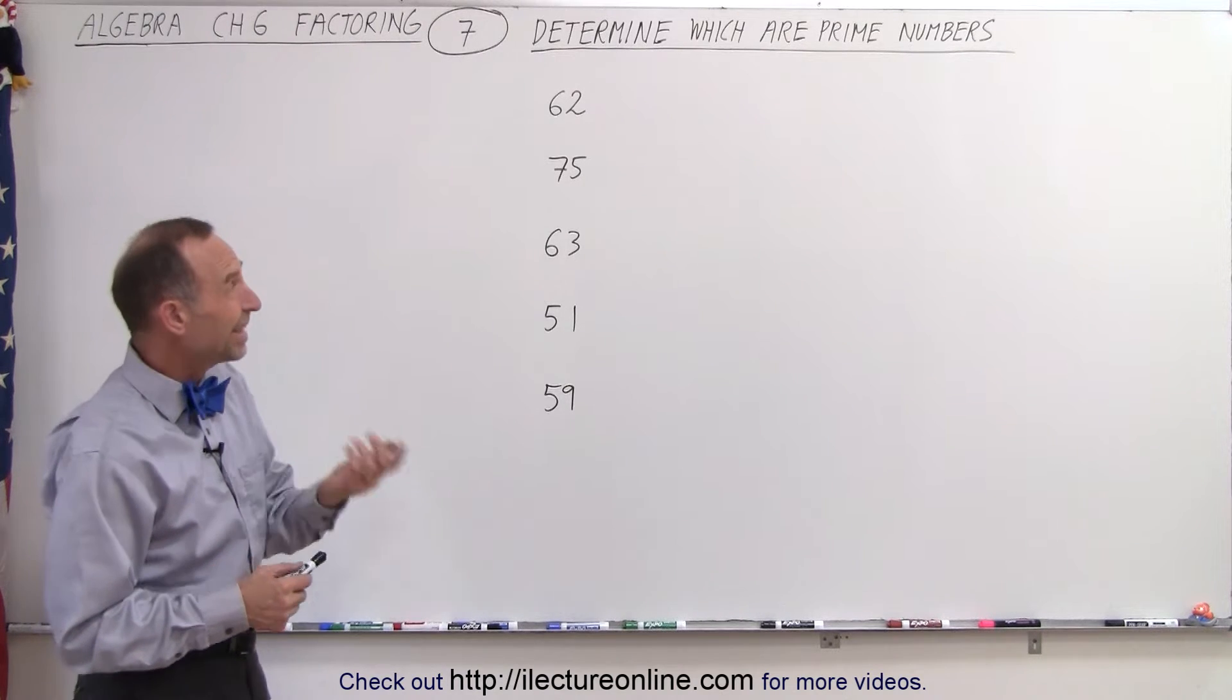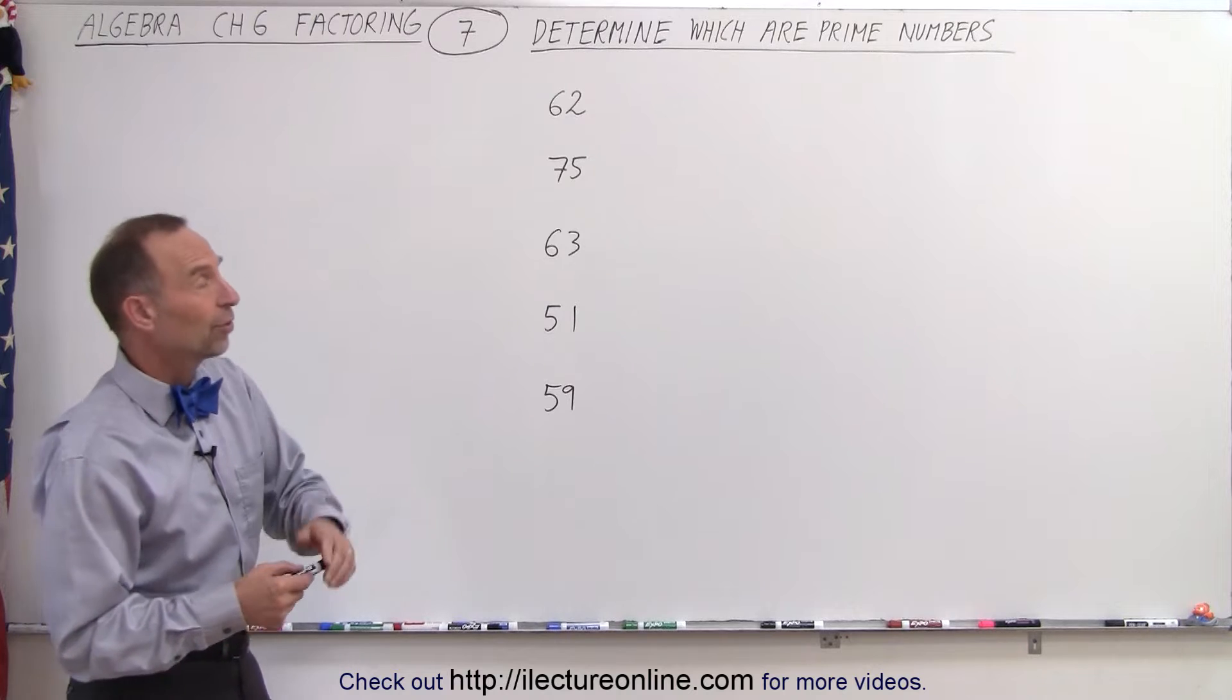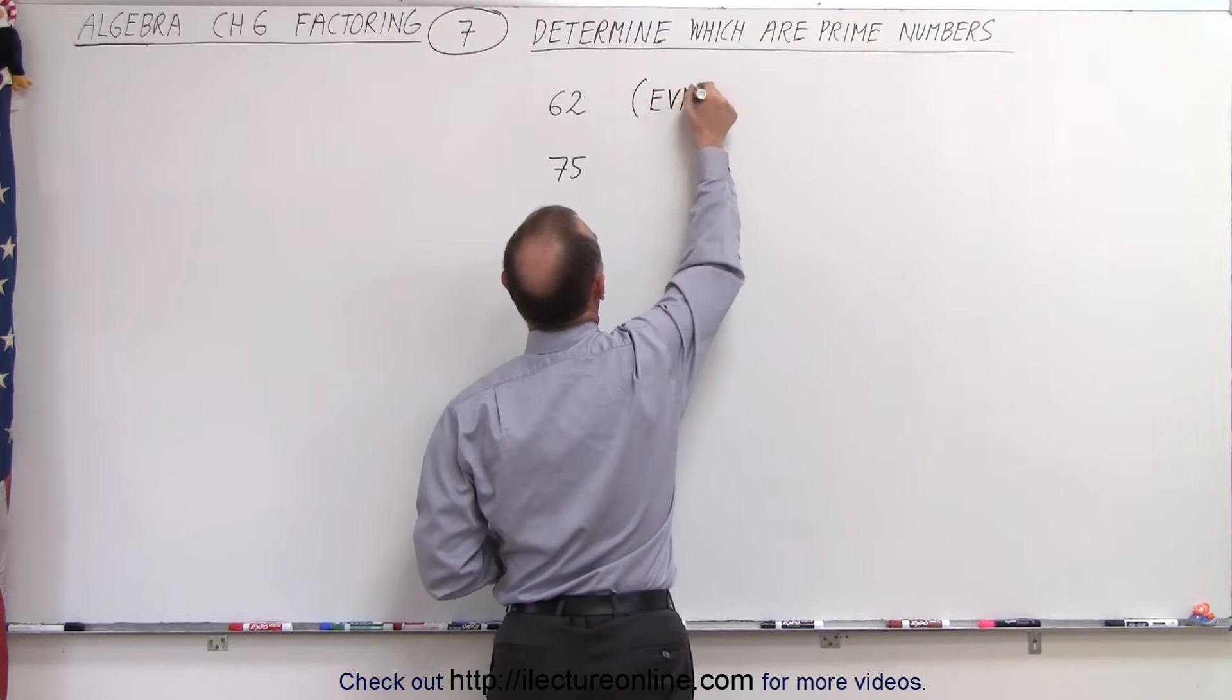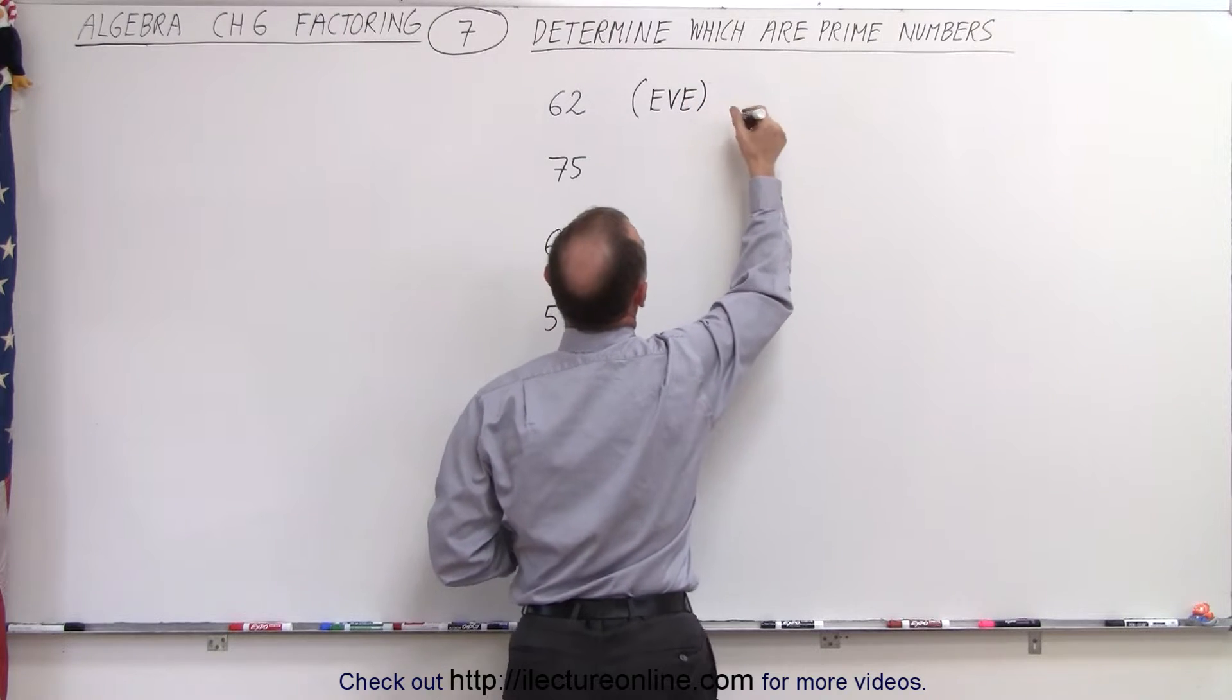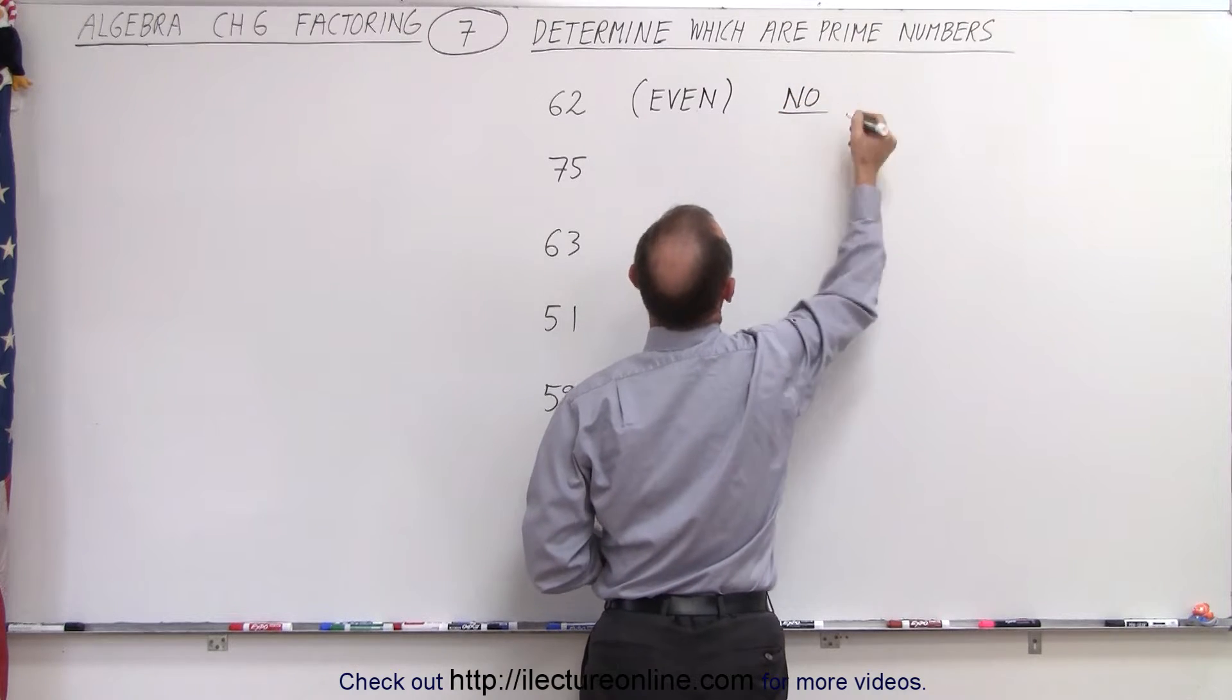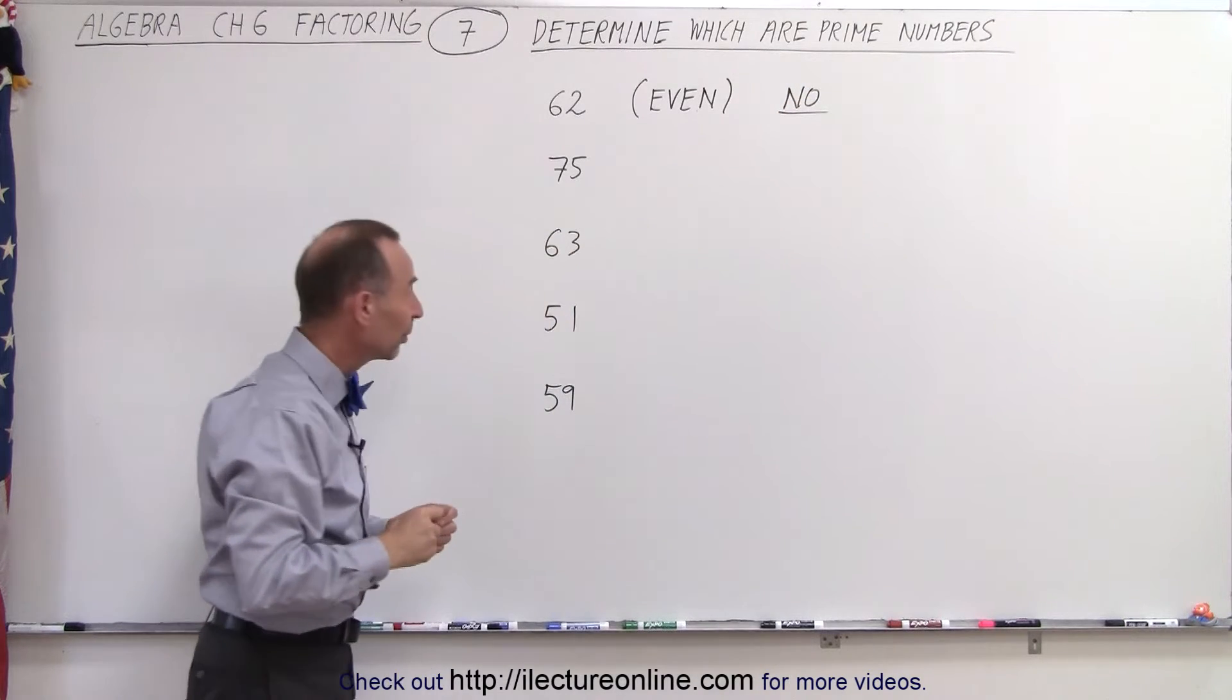So looking at our first number, 62, since it's even, we know it's not a prime number. So it's an even number, it's divisible by 2, therefore, oh I've forgotten the end here, even, then you know it's not a prime number.